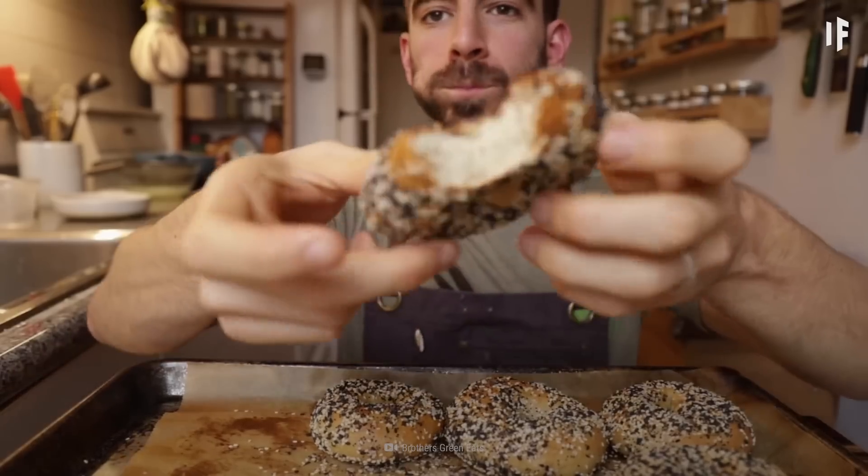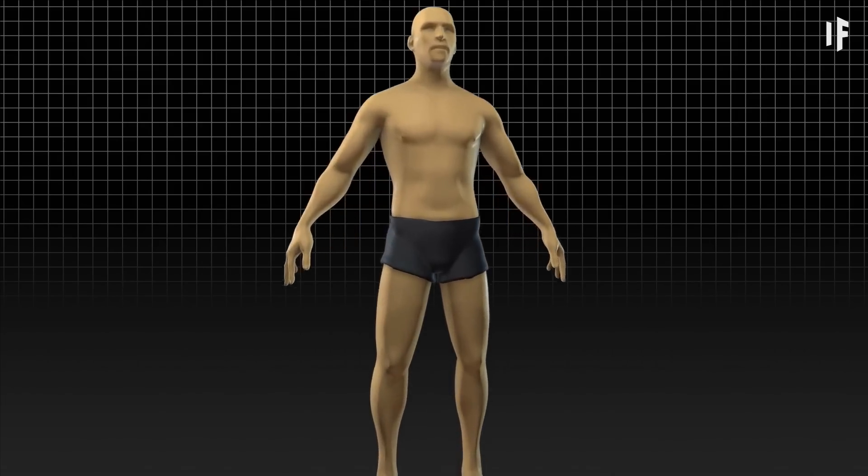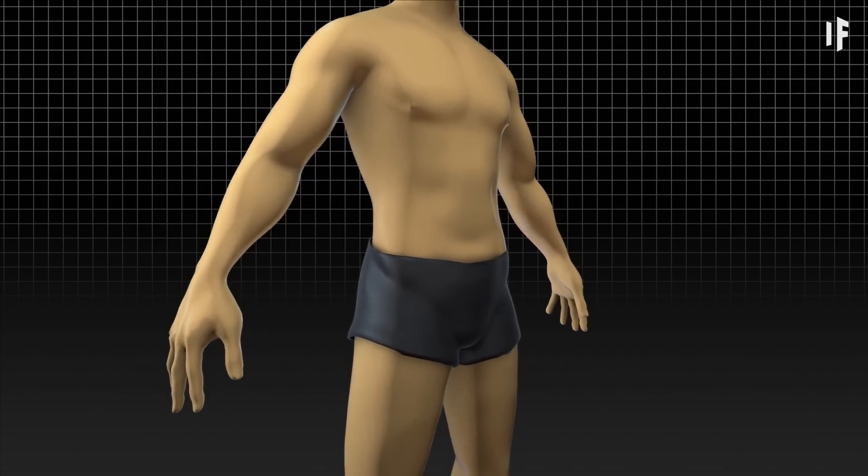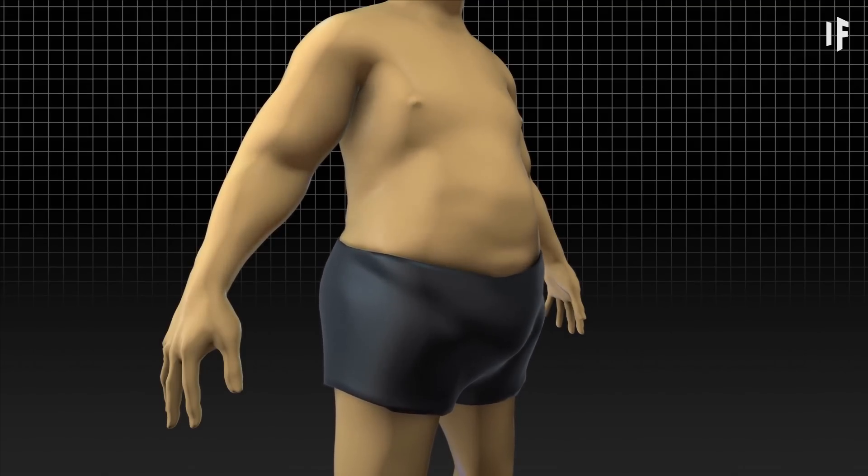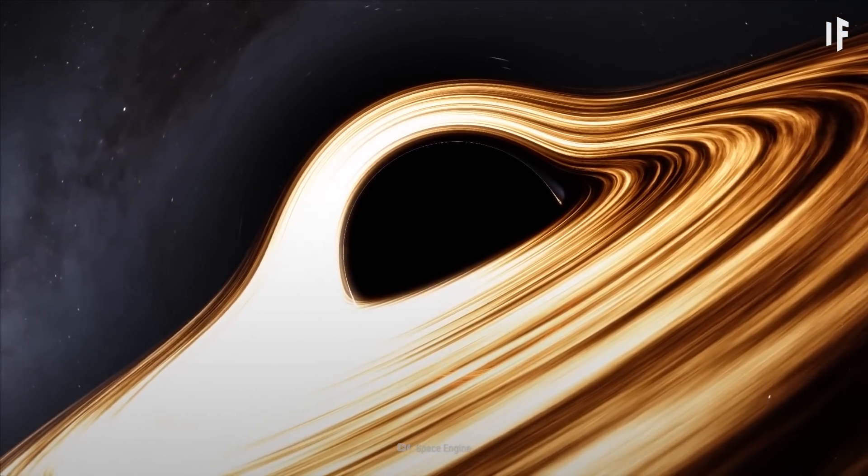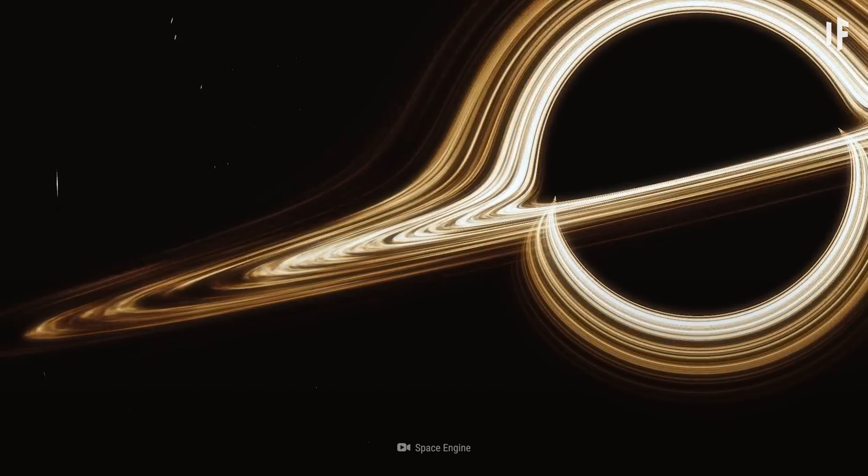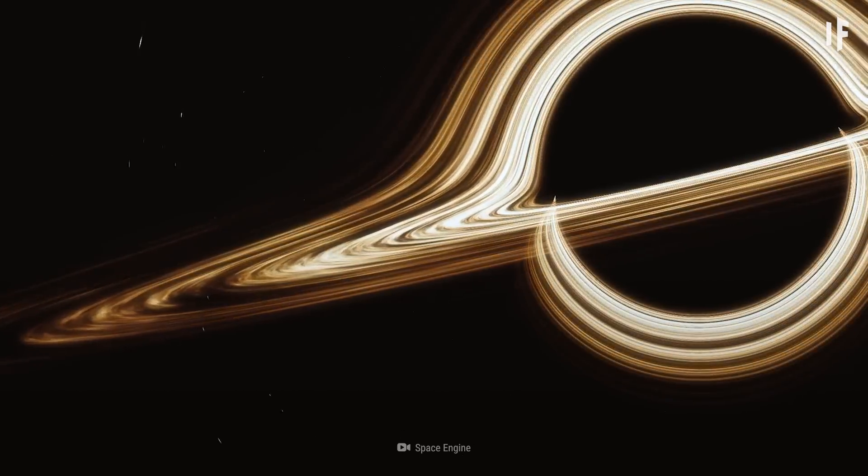When you eat, say, a bagel, your mass increases by the mass of that bagel. With your mass increased, your volume grows, and so does your surface area. For a black hole, it's different. It's only the surface area, and not the volume, that increases with every bite.